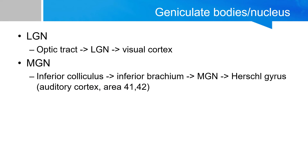The geniculate bodies are the posterior inferior-most portion of the thalamus, and the lateral and medial geniculate bodies are sometimes referred to as the metathalamus. The lateral geniculate nucleus is covered in the visual pathway video. The medial geniculate nucleus is involved in auditory information processing, covered in the auditory pathway video.